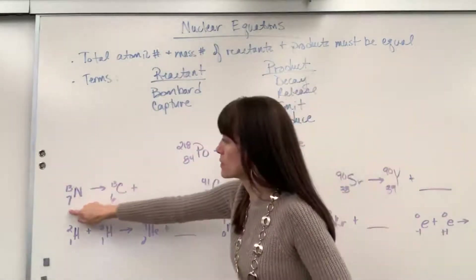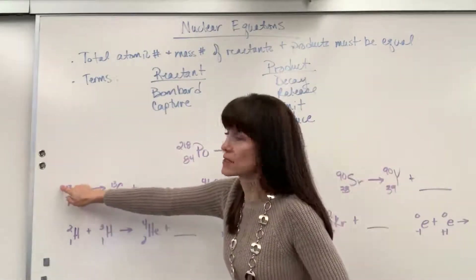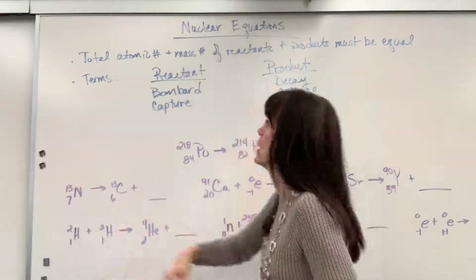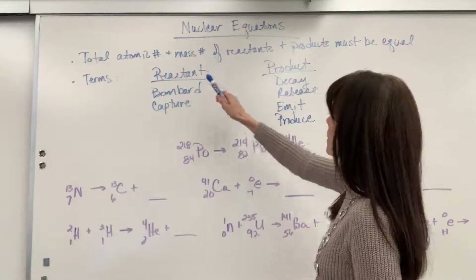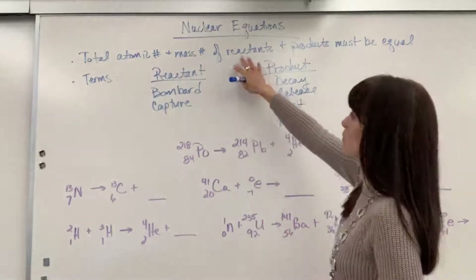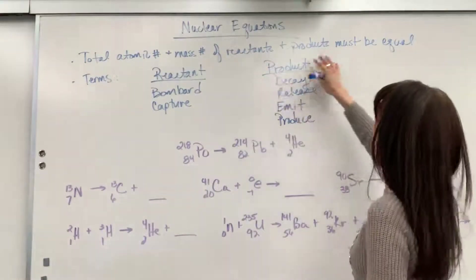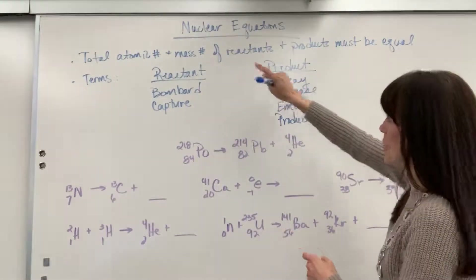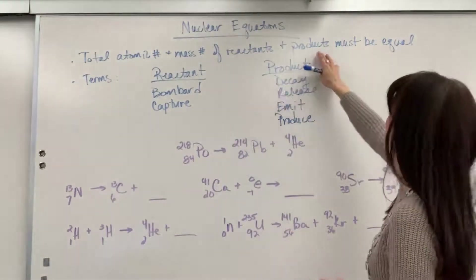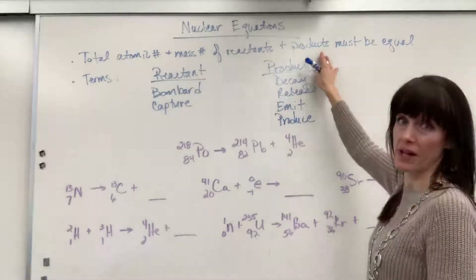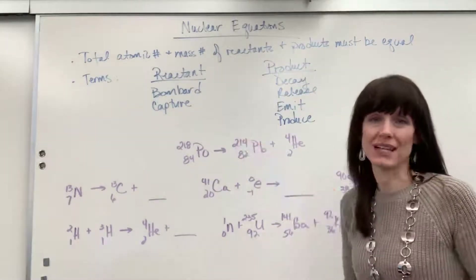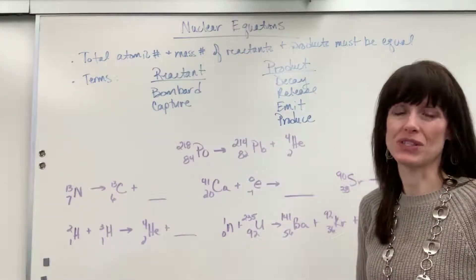Remember, atomic numbers are on the bottom, mass numbers are on the top. The total atomic number and mass number for the reactants has to equal the atomic number and mass number for the products. Those two sides have to be equal to each other.